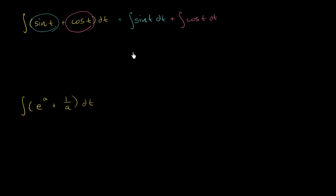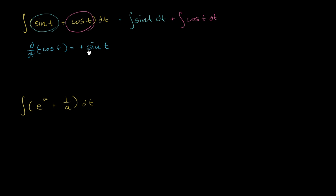We already know a little bit about taking the derivatives of trig functions. We know that the derivative with respect to t of cosine of t is equal to negative sine of t. So if we want a sine of t, we take the derivative of negative cosine t, which gives us positive sine of t. So the antiderivative of sine of t is negative cosine of t.